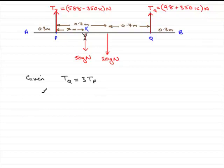So simply, we know the tension in Q is 98 plus 350x. Therefore we've got 98 plus 350x has got to equal three times the tension in P, and that's 588 minus 350x.